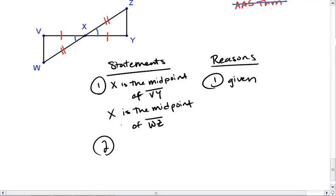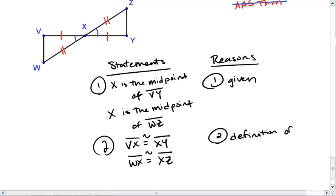Next, I can conclude that VX is congruent to XY, and that WX is congruent to XZ. This is by the definition of midpoint.